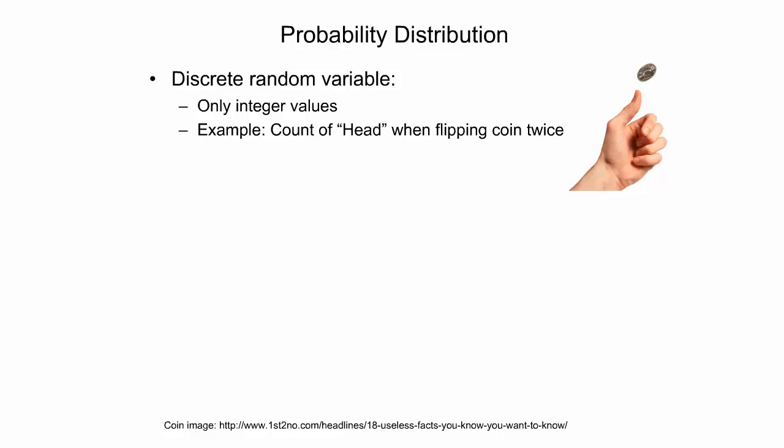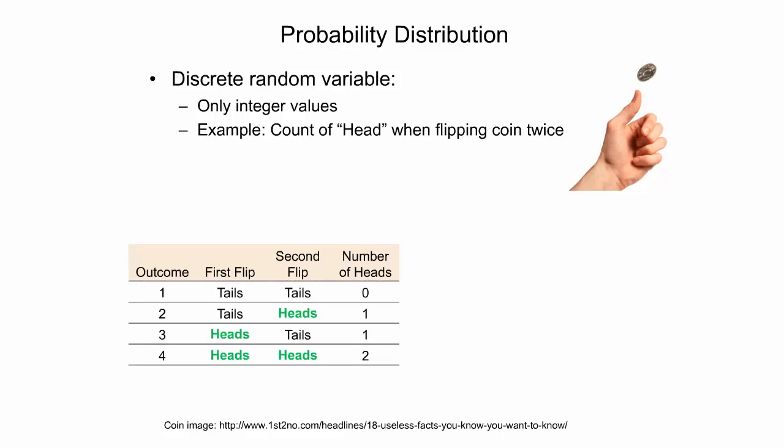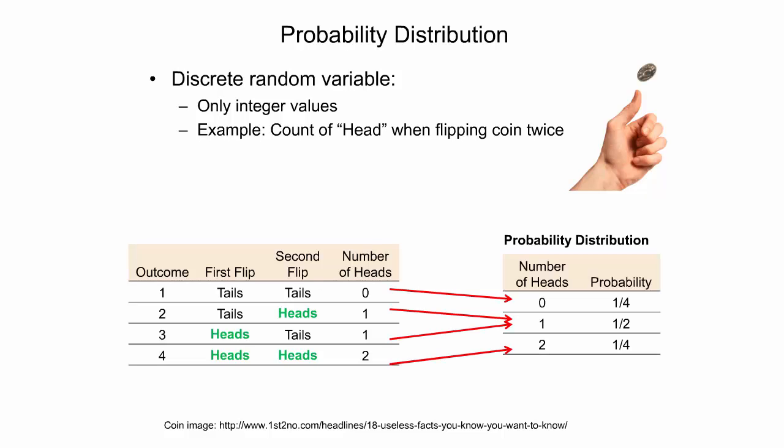A discrete variable can only take integer values such as 1, 2, or 10. An example of a discrete random variable is the count of heads when flipping a coin twice. The left table shows the four possible outcomes, each equally likely with a probability of 25%. The number of heads will always be an integer, taking values 0, 1, or 2. The probability distribution maps zero headcounts to 25%, one headcount to 50%, and two headcounts to 25%.